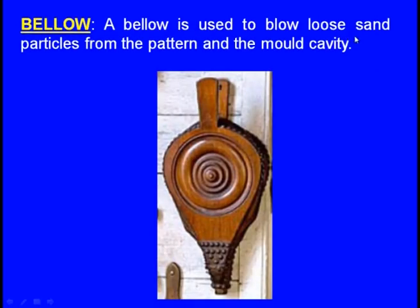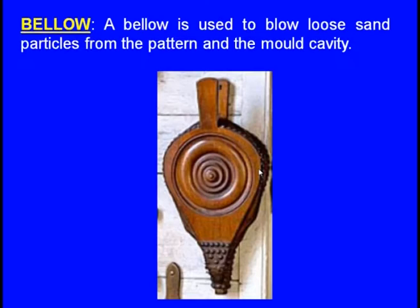Next, billow: a billow is used to blow loose sand particles from the pattern and from the mould cavity. After withdrawing the pattern, loose sand particles inside the cavity must be removed carefully without damaging the cavity shape. Using billows, air is blown to throw out the loose sand particles.